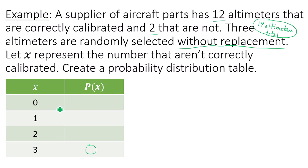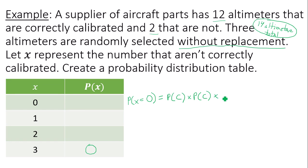Next, the probability you get zero altimeters that are not correctly calibrated. For P(x=0), that would be the probability you get an altimeter that's correctly calibrated in the first trial, the probability you get a correctly calibrated altimeter in the second trial, and also the probability you get a correctly calibrated altimeter in the third trial. So in the first trial, out of 14 altimeters, how many would be correctly calibrated? The favorable outcomes would be 12.